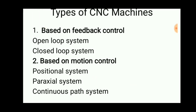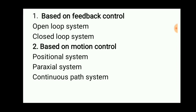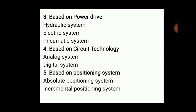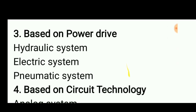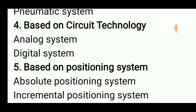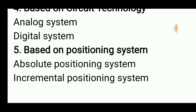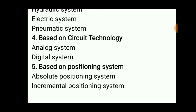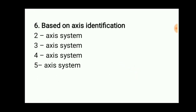Types of CNC machines: based on feedback control, they are divided into open loop systems and closed loop systems. Based on motion control, they include point-to-point, paraxial, and continuous path systems. Based on power drive: hydraulic, electric, and pneumatic systems. Based on circuit technology: analog and digital systems. Based on positioning: absolute and incremental positioning. Based on axis: two-axis, three-axis, four-axis, and five-axis.